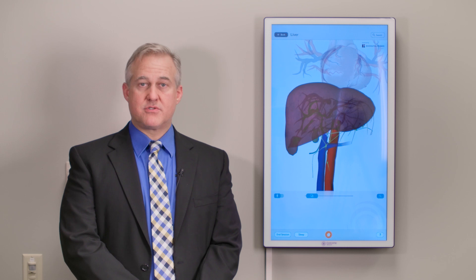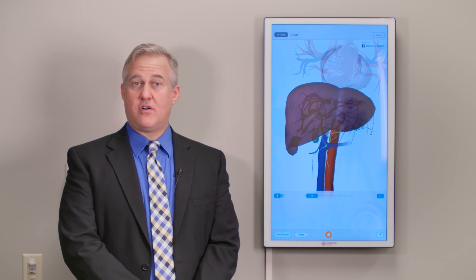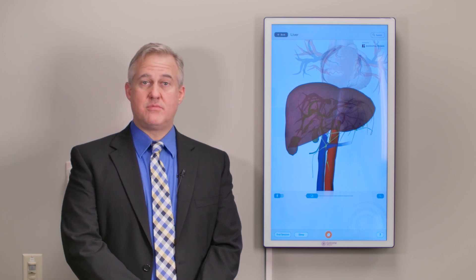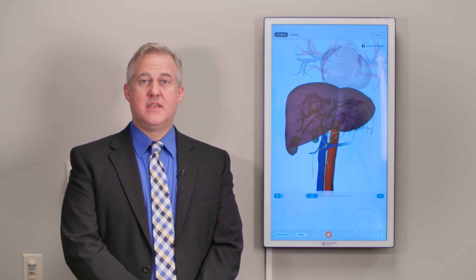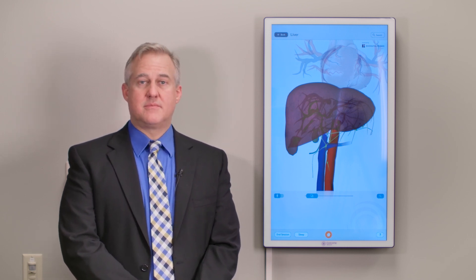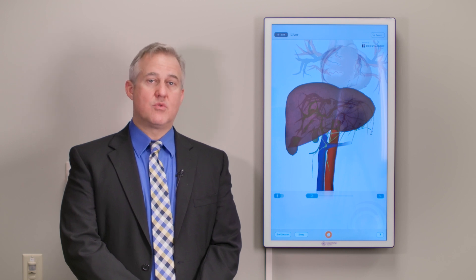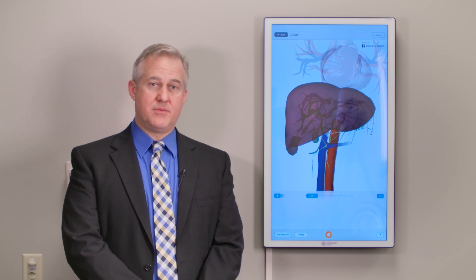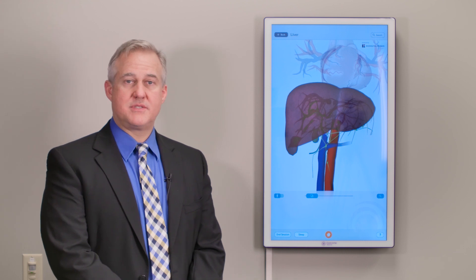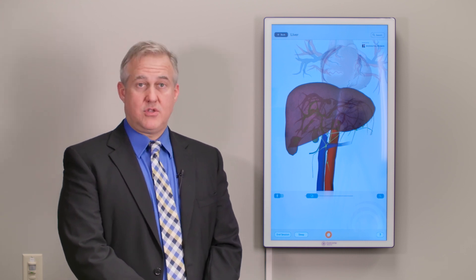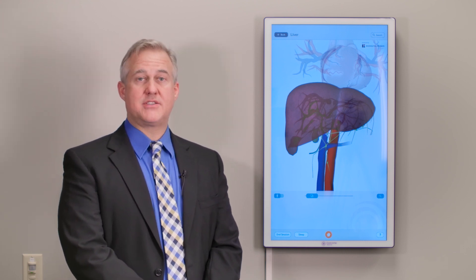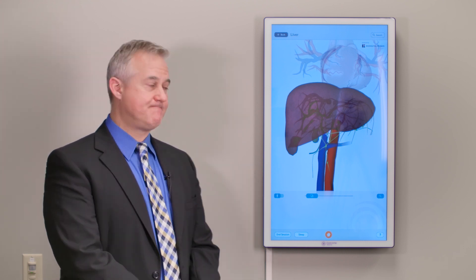Any major liver surgery may involve the removal of the gallbladder, if it is still present, and this is done so that we can work in the appropriate surgical plane. Let me now show you the different types of resections that you may hear about at your office visit.